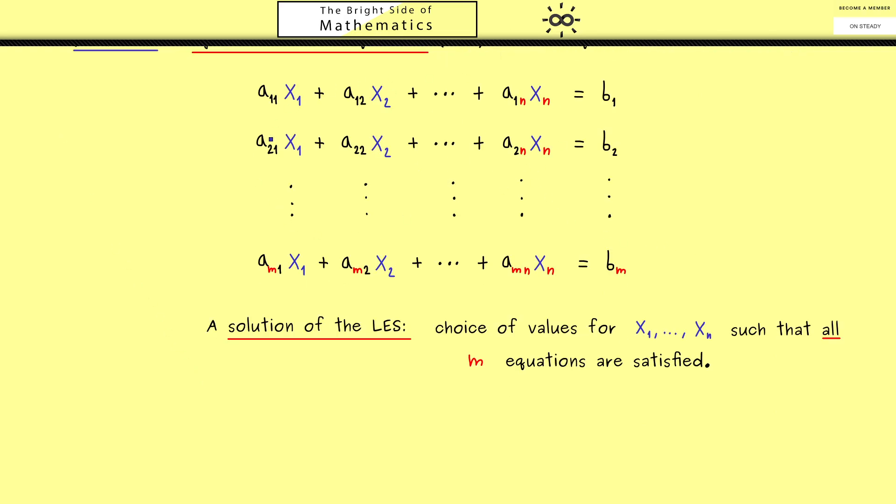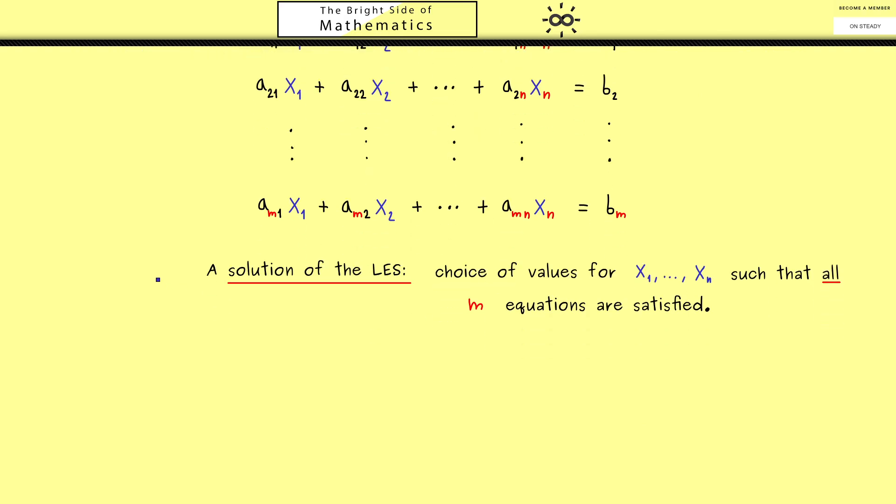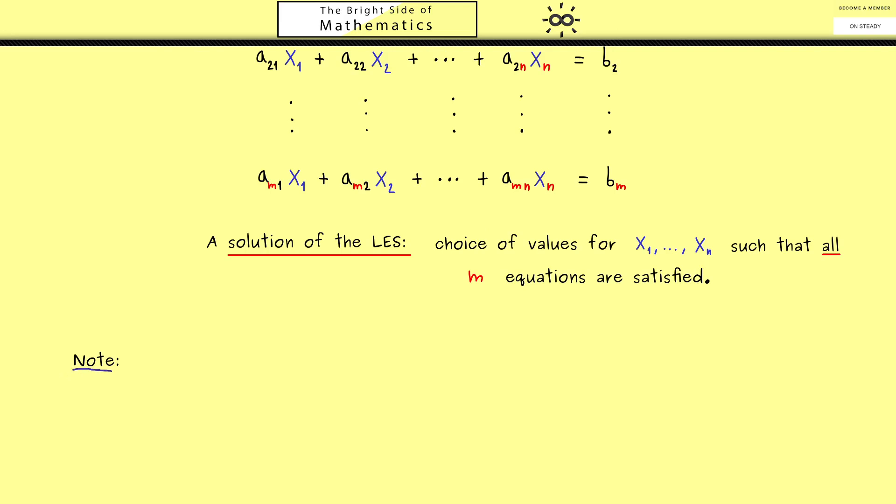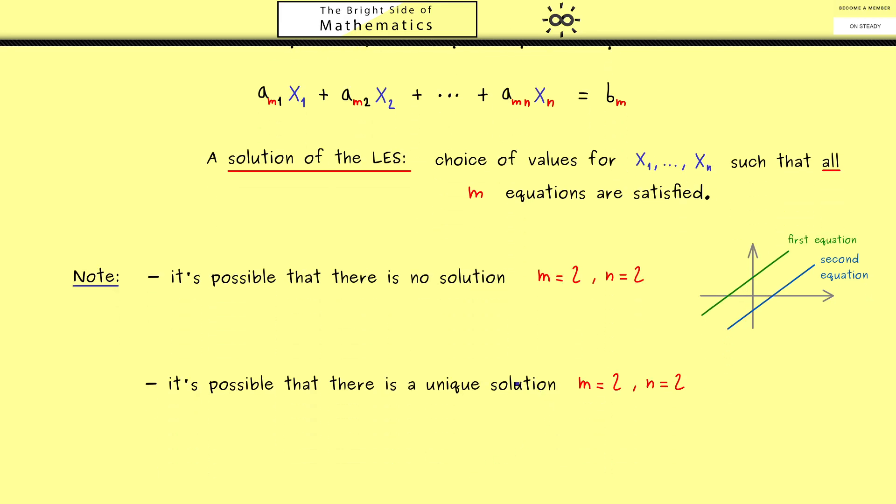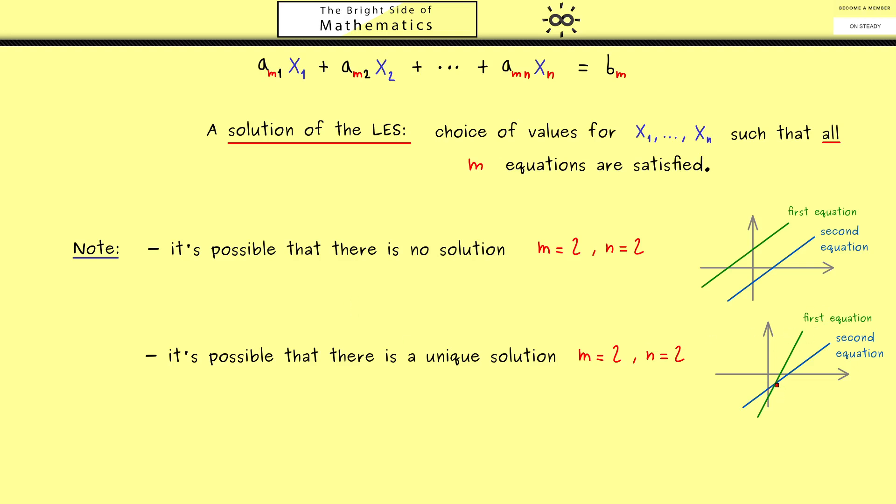However by considering simple low dimensional cases you already see that a lot of cases could occur. For example we could have the case that no solution exists at all. And this fact we could visualize in the case that we have two equations and two unknowns. Then we know from previous videos that such a linear equation just describes a line in the plane. Hence in the case that both lines are parallel we don't find a combination of two numbers such that both equations are satisfied at the same time. In short, no intersection point means there is no solution for the whole system. On the other hand this then means that we can also visualize the case that we find a solution and this one is also the only one. In other words it's possible that we find a unique solution for this system. So in the picture it means there is only one intersection point.